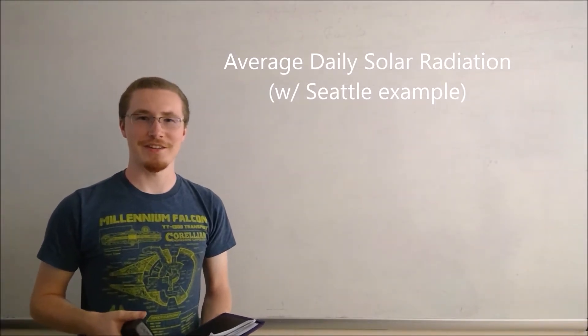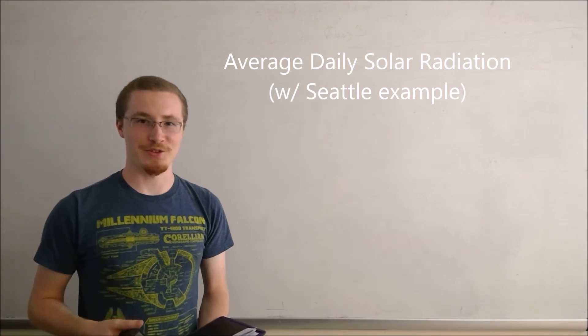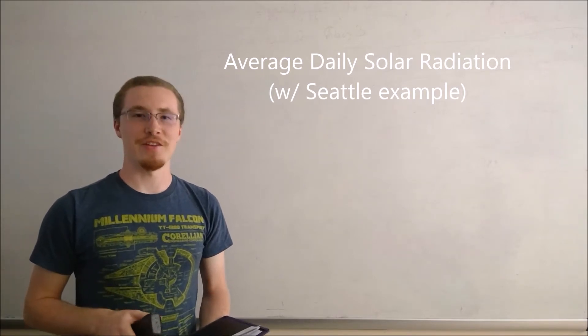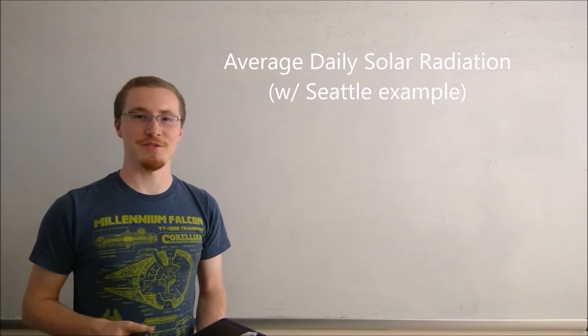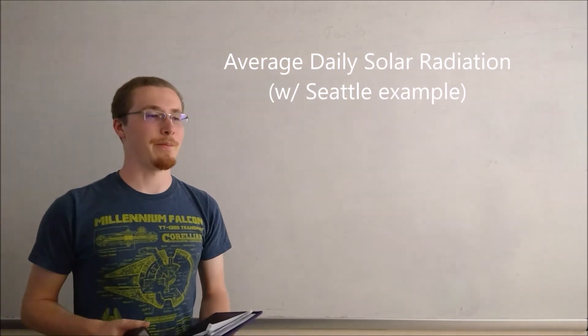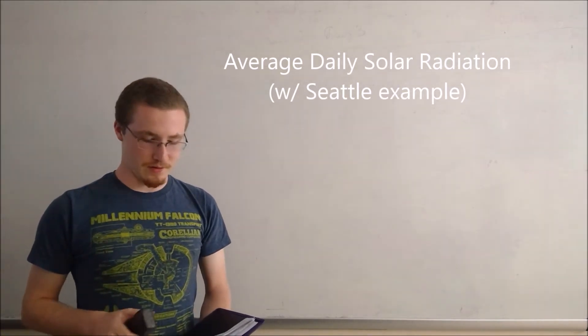Hello, my name is Thomas Lamb and I am in the Atmospheric Science Department at the University of Washington. Today I will be deriving an equation for the average amount of solar radiation at any point on the earth over the year.